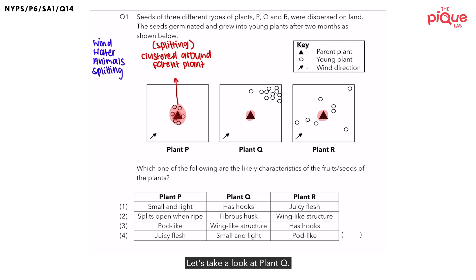Let's take a look at plant Q. If you look carefully, they are all dispersed in a certain direction. The fruits or the seeds are all dispersed towards the top right. What do you think caused all of these seeds to be dispersed only towards the right side? It must be the wind. This can be confirmed by checking the direction of the wind. Since all of the seeds are dispersed in the direction of the wind, let's write that down.